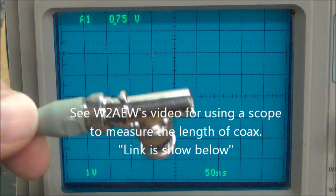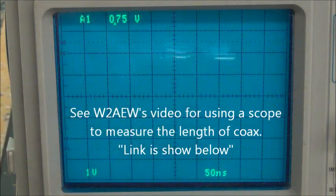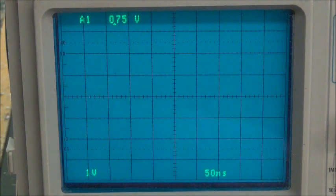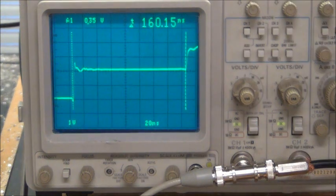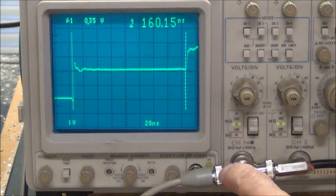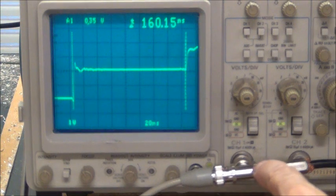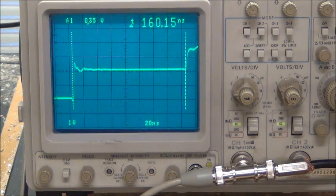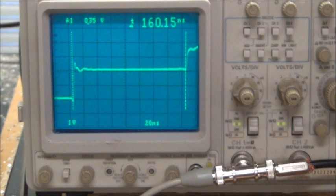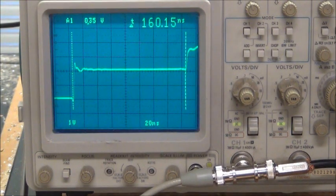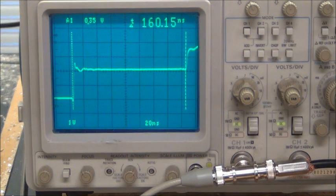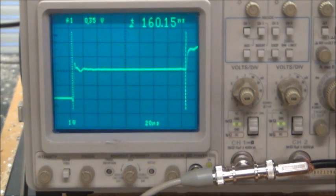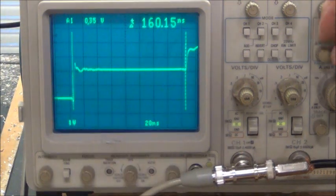From my function generator I'm going to feed a signal into channel one. Let me get this thing set up here. I'm set up here with the function generator feeding the signal into a T connector, and off that T connector I have my spool of coax. I know how long this coax is now because I've actually measured it, and it is 66 foot 2 inches.